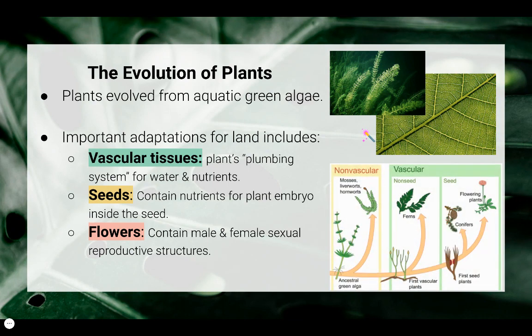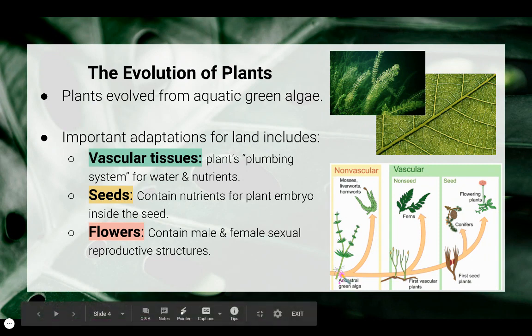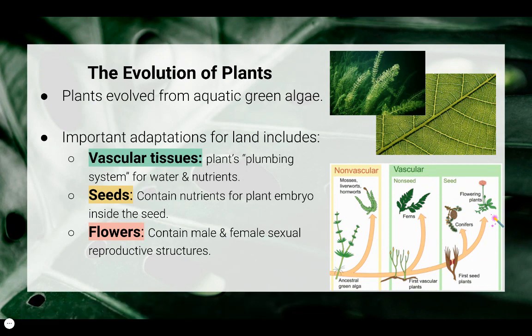Each of these major adaptations made plants better suited for life on dry land and much more successful. We're going to be taking a look at the four major plant groups in the next video and seeing how these adaptations made these plants thrive on land. Stay tuned for the next video — thanks for watching!